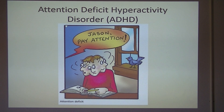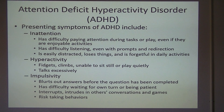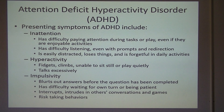Children with ADHD have problems paying attention, controlling impulsive behaviors, or may be overly active. While it's normal for children to have difficulty focusing sometimes, children with ADHD do not outgrow these behaviors and have difficulty at home and at school. They might daydream a lot, squirm or fidget, talk a lot, take unnecessary risks, and have trouble taking turns or getting along with others. ADHD is usually not diagnosed until after a child starts school, as problems must be present in two different locations — typically home and school.